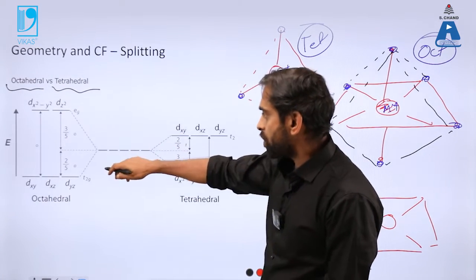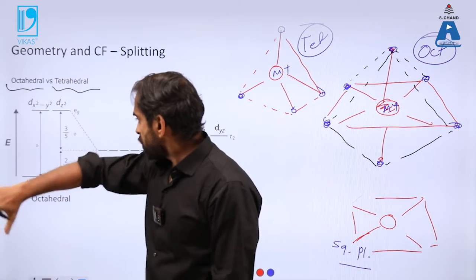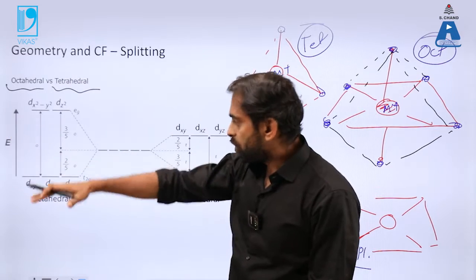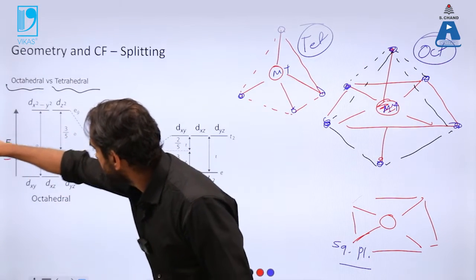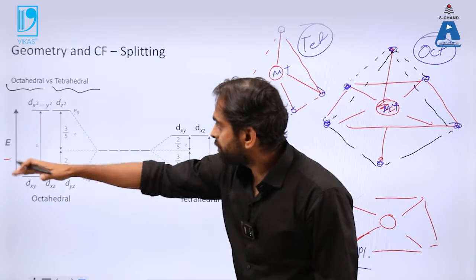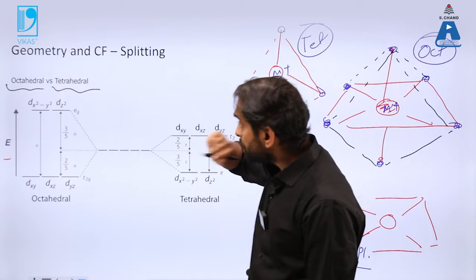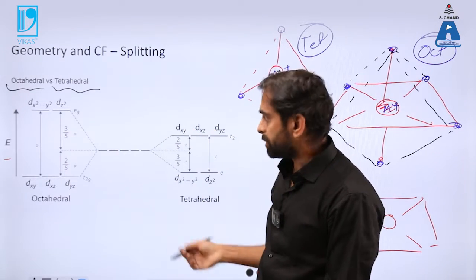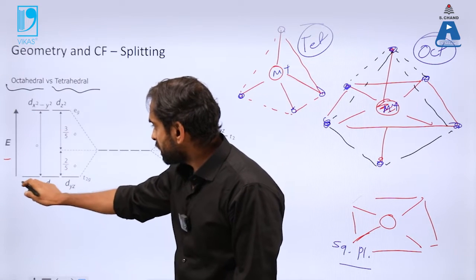So once the splitting has taken place, you can see here xy, yz, and xz all these three which we can call as t2g are at the lower level and two more which we call eg are on the top level.